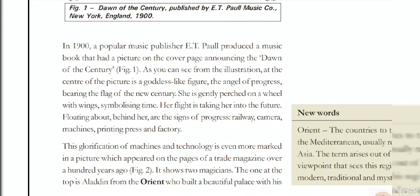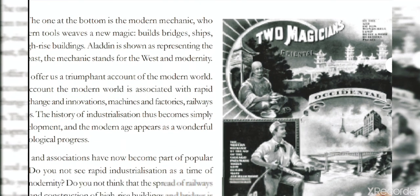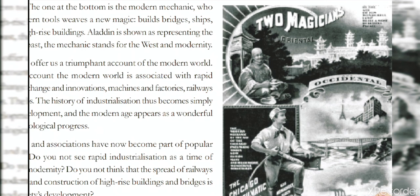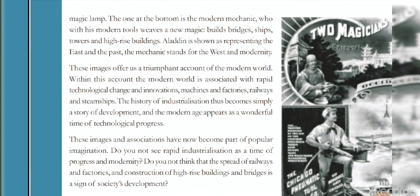These images show how society was changing at that time. The term 'Orient' was used for countries east of the Mediterranean — this included Asian countries. There is another illustration showing two magicians: one is Aladdin with his magic lamp, who could get many things done through magic. The other magician represents the European engineer who could build large bridges and buildings using technology. This compared the societies of the East — India, China, and Asian countries — with Western European countries and their development through scientific inventions.